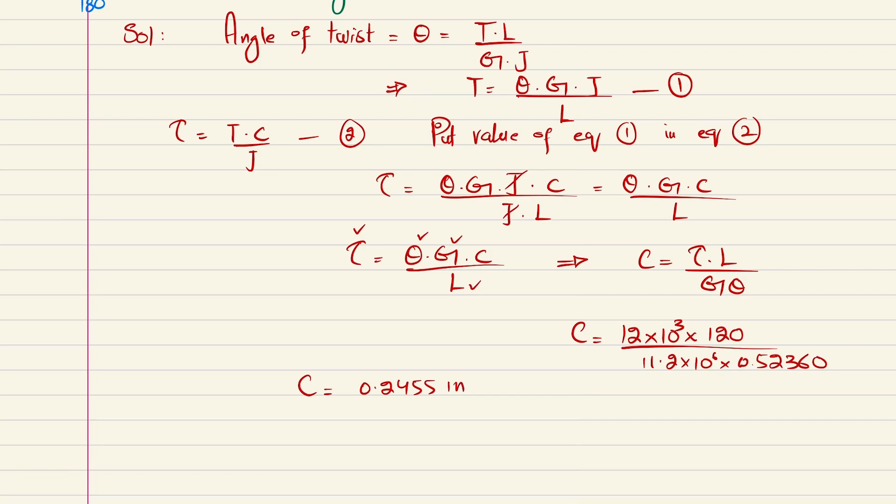This is the radius. We know that diameter equals 2 times c, so 2 × 0.2445 gives you the diameter, which comes out to be 0.491 inches.